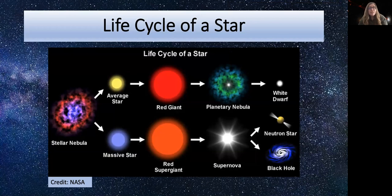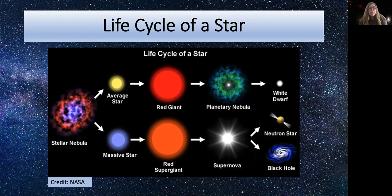Stars are formed in clouds of gas and dust known as nebulae. This gas cools and becomes dense and eventually you form a star. Nuclear reactions at the core of stars provide enough energy to make them shine brightly for many, many years. This stage is known as the main sequence. Stars spend most of their lives in this phase, converting hydrogen into helium in their cores. Nothing much changes — the star slowly gets bigger and brighter, but it sits there doing the same thing for many years.